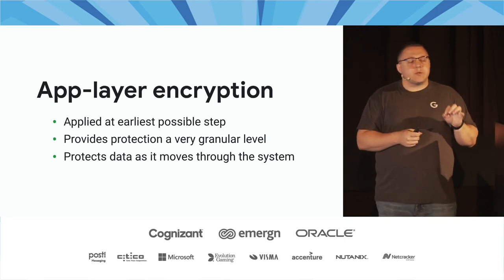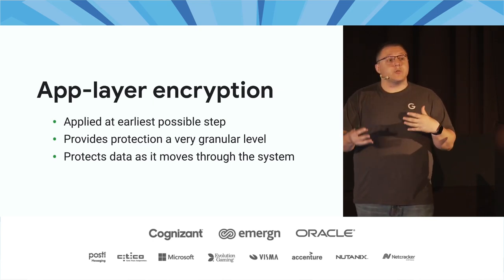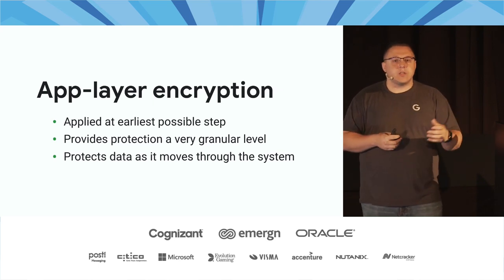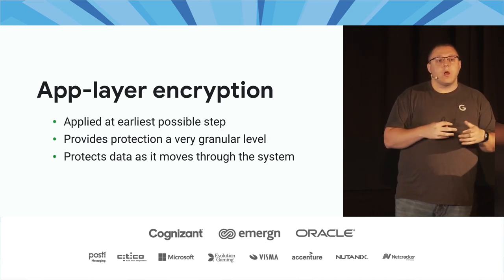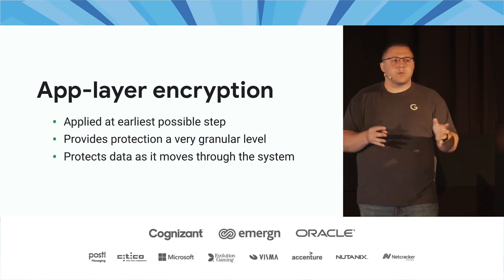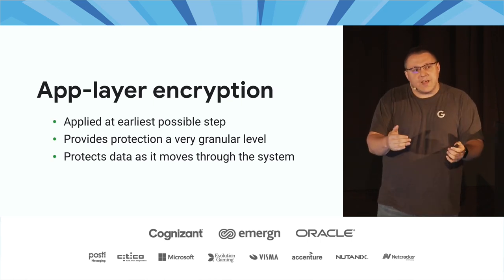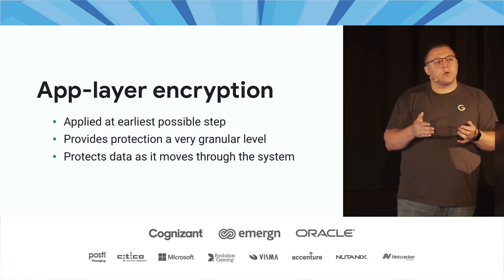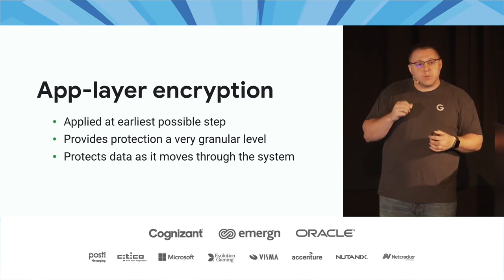Application-layer encryption also protects data as it moves throughout the system. You may not recognize all the various consumers of your service, especially in a large enterprise. By encrypting data before it leaves your application, you reduce the chances of someone accidentally leaking that credential. Twitter — or Facebook — had a blog post where they were accidentally logging passwords in plain text. They were encrypting with bcrypt, but before doing so they were logging to a third-party system in plain text. Applying encryption at the earliest step helps protect data whether accidentally or intentionally.